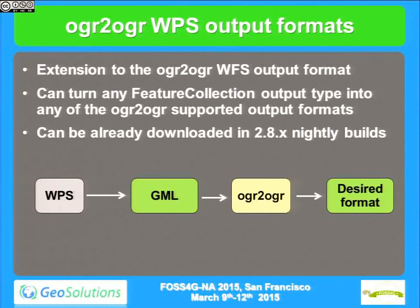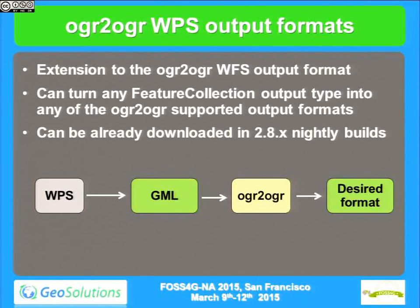So that's what we have in 2.7, releasing in two weeks. What's cooking for 2.8? We just started work on 2.8 but already know a few things coming. One is OGR-to-OGR WPS output format support — for all the funky formats we don't support natively, we added the ability to call out to OGR2OGR and generate whatever output format OGR2OGR supports, which means tens of new output formats.